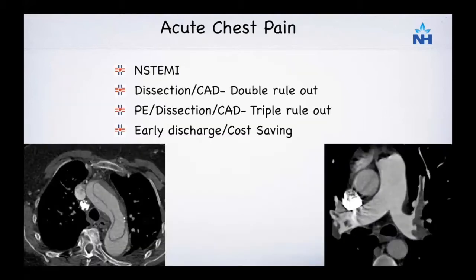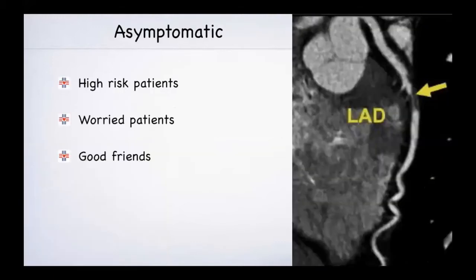For acute chest pain, especially in NSTEMI, we have seen that a lot of patients end up having non-coronary abnormalities. We have been providing a service over the last 10 years called a double rule out, whereby if your dilemma is coronary artery disease versus aortic dissection, we look at both pathologies simultaneously. If you also want to exclude pulmonary embolism, we do a triple rule out. This has been shown to save cost for the patient and help in earlier discharge.